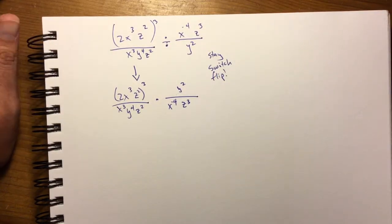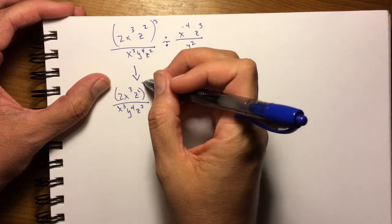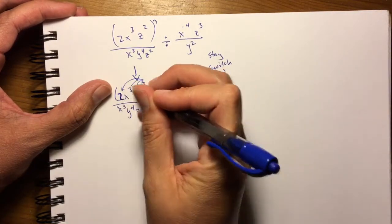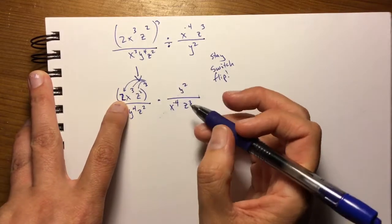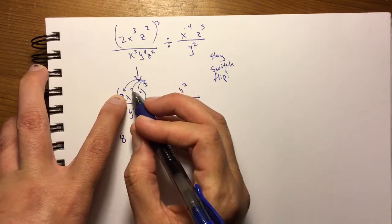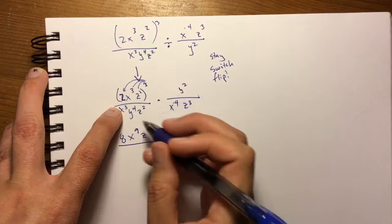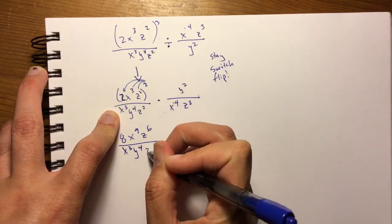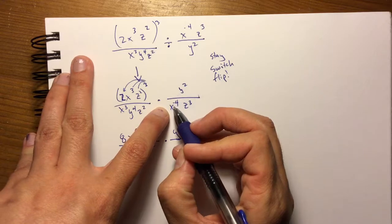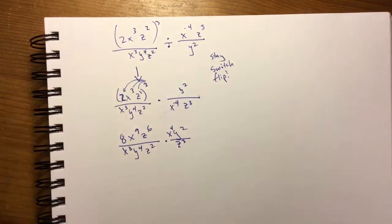Now we can deal with these. I'm going to foil out the cubed exponent — the thing people most often forget is that the coefficient also has to be raised to that exponent. So 2 cubed is 8. x to the third cubed — we're raising to a power so we multiply — gives x to the ninth. z squared cubed gives z to the sixth. Then we also have x cubed, y to the fourth, z squared, times y squared. The x to the negative fourth has a negative sign so it wants to flip to the top, becoming x to the fourth, and z cubed stays on the bottom.